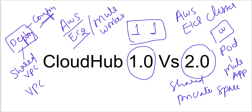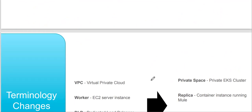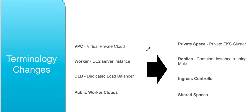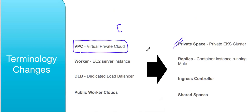Now let's talk about more differences between CloudHub 1.0 and 2.0 in terms of technology and terminology changes. We have VPC in CloudHub 1.0 for extending our network, and we have private space in CloudHub 2.0. There is a worker concept in CloudHub 1.0, while there is a replica concept in CloudHub 2.0.